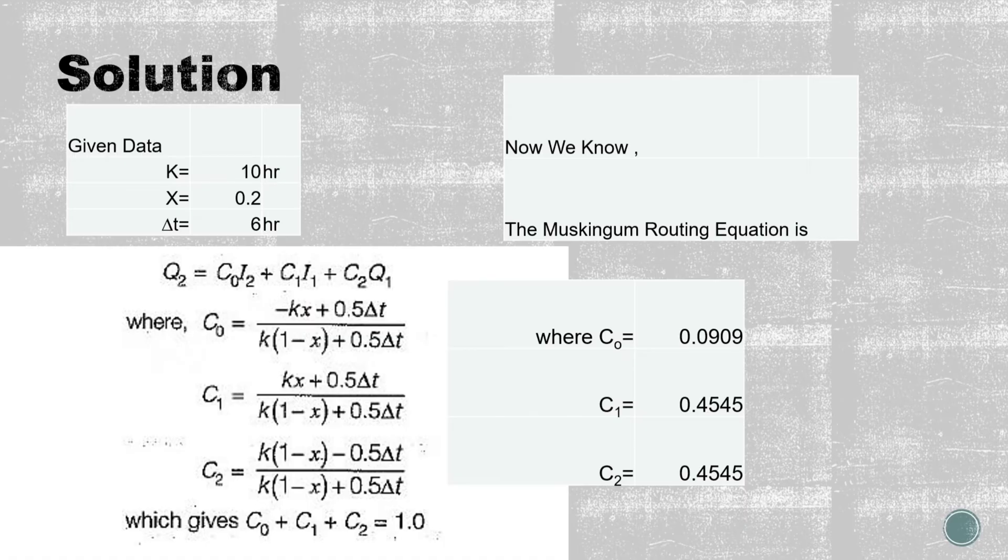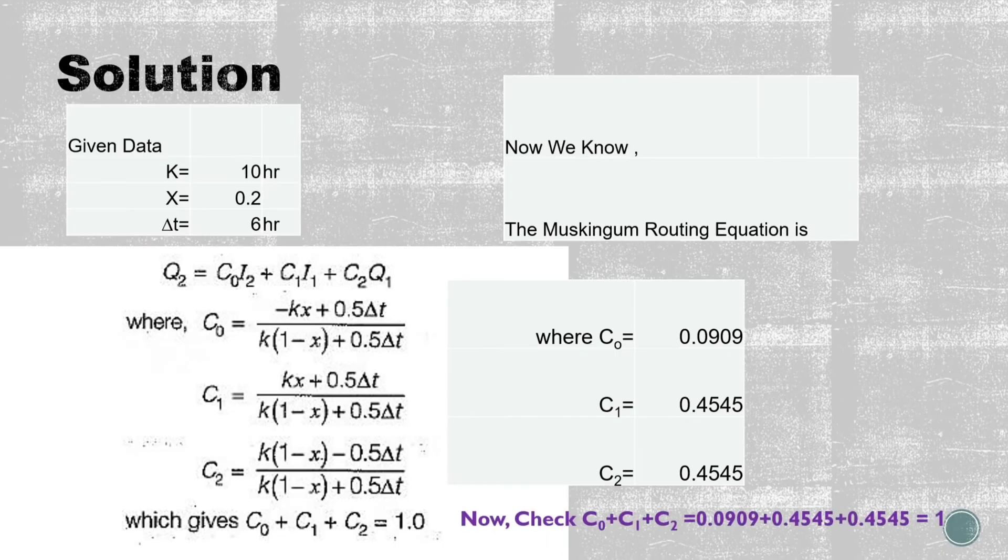For C0, you have to place the values of K, X, and delta t in the respective formulas, and you will get these values on calculating. After calculating these values, you have to check that C0 plus C1 plus C2 equals 1. Here the equation satisfies our condition.